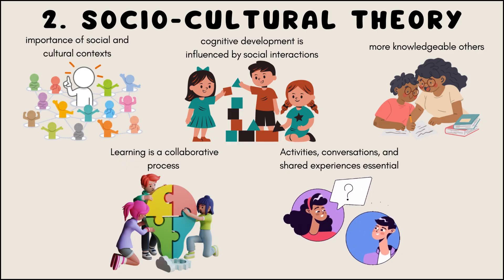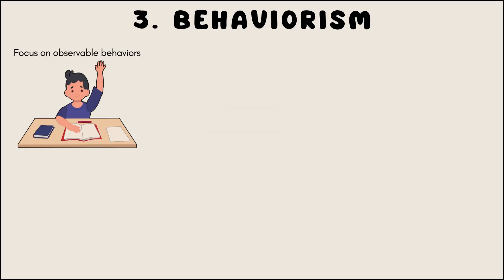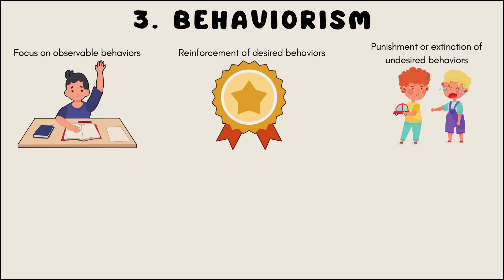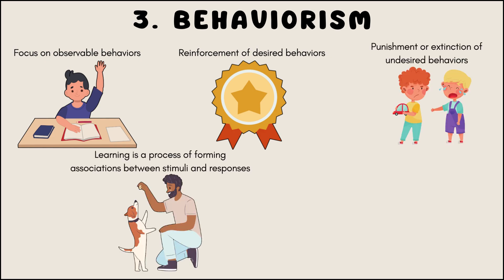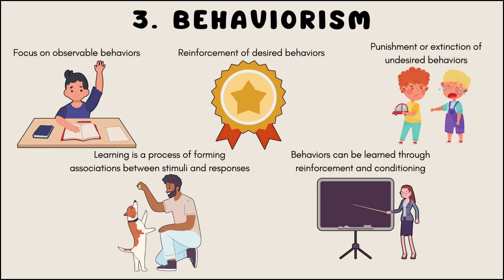Behaviorism is a theory that emphasizes the study of observable behaviors and their consequences. It suggests that learning occurs through the reinforcement of desired behaviors and the punishment or extinction of undesired behaviors. Behaviorists believe that learning is a process of forming associations between stimuli and responses, and that behavior can be shaped through reinforcement and conditioning.